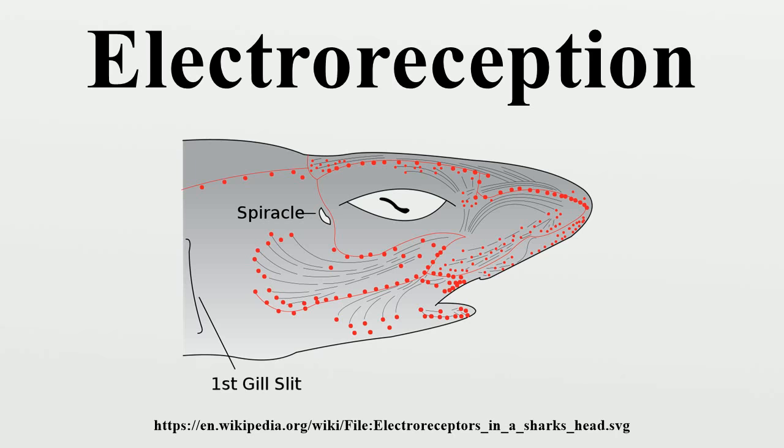The electric eel, besides its ability to generate high-voltage electric shocks, uses lower-voltage pulses for navigation and prey detection in its turbid habitat. This ability is shared with other gymnotiforms.